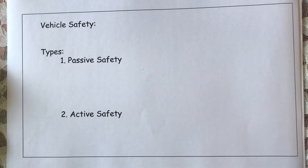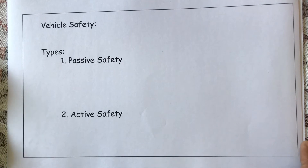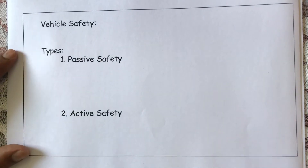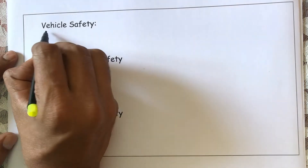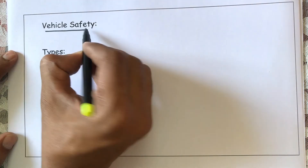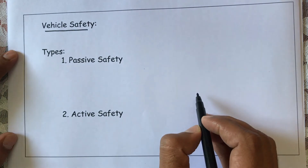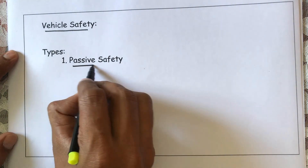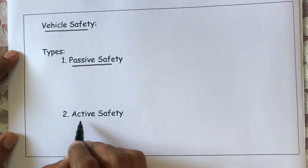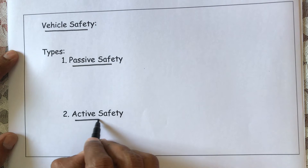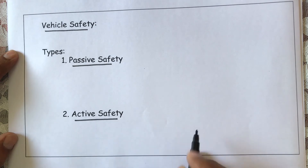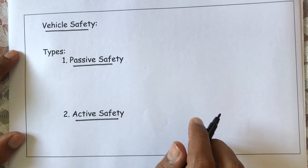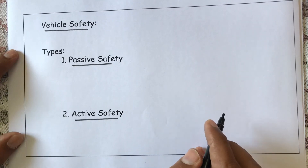We will study the last part of this unit number five, that is vehicle safety. Vehicle safety is of two types: that may be passive safety or that may be active safety.